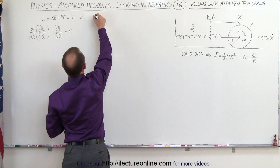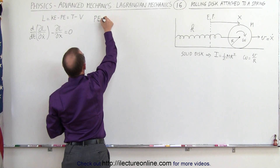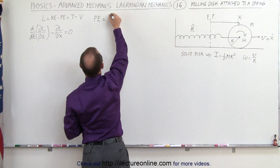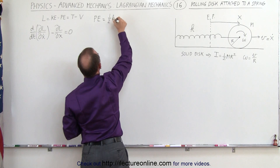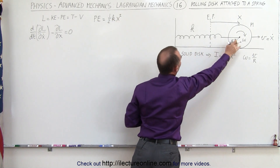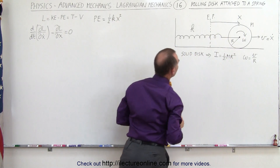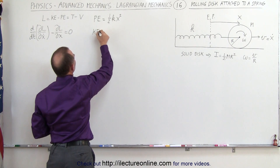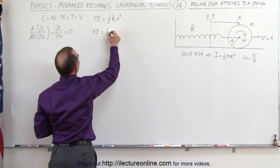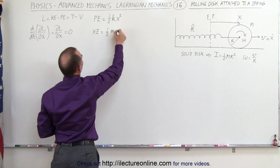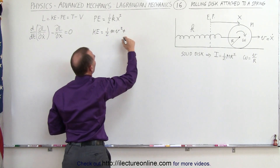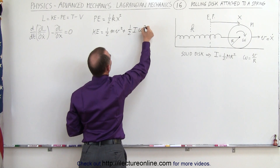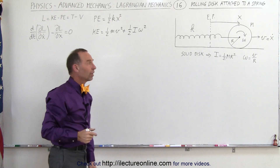Let's start with the potential energy. The potential energy of the system is equal to the energy stored in the spring, which is one half kx squared, where x is the distance of the rolling disk away from the equilibrium point. The kinetic energy will be equal to the sum of the translational energy, one half mv squared, plus the rotational energy, one half times the moment of inertia times omega squared, the angular velocity.